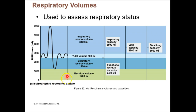We have acronyms for each: TV — tidal volume; IRV — inspiratory reserve volume; inspiratory capacity; ERV — expiratory reserve volume; RV — residual volume; VC — vital capacity. I don't care about the specific numbers, but I definitely want you to know all the names of all these different volumes — I can absolutely hold you to these. There are all kinds of gadgets used in pulmonary medicine to measure these, and you will absolutely use them.